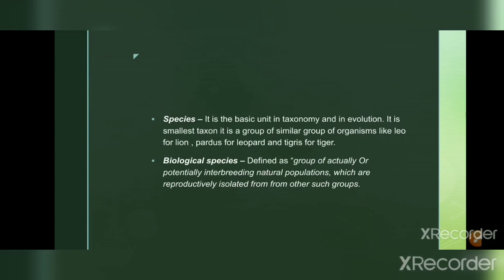Species is the last and most basic taxonomic rank, sometimes split further into sub-species. It is the basic unit of taxonomy and the smallest taxon in evolution. Examples: leo for lion, pardus for leopard, tigris for tiger. There are 8.7 million different species on Earth. Species names are italicized and never capitalized, occupying the latter half of binomial nomenclature. Species can be differentiated from closely related species based on unique morphological differences.